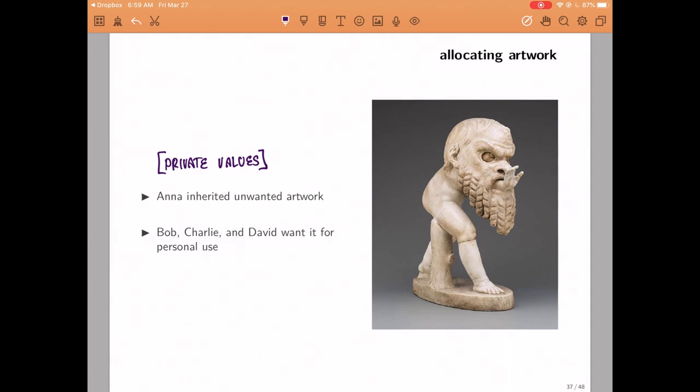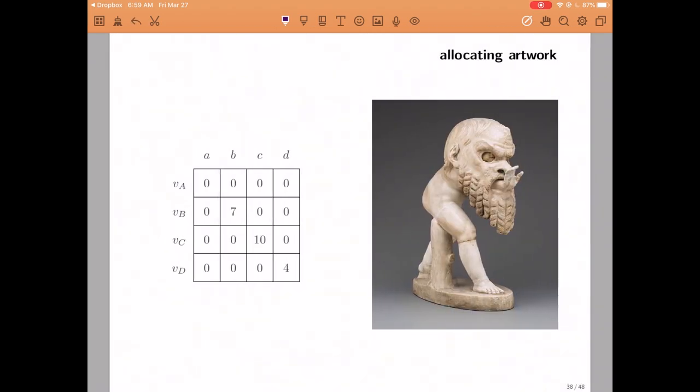Given this assumption, it is natural to also assume that this information is private. Only I know how much I like this specific piece of art. So we can map this into a social choice problem where the alternatives are to give the object to Anna, Bob, Charlie, and David, and their values are given in this table. We are assuming that Charlie's value is the greatest. He values the piece of art 10, Bob 7, and David 4, in which case the efficient thing to do would be to give the object to Charlie.